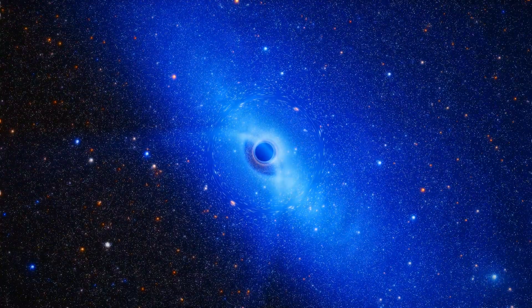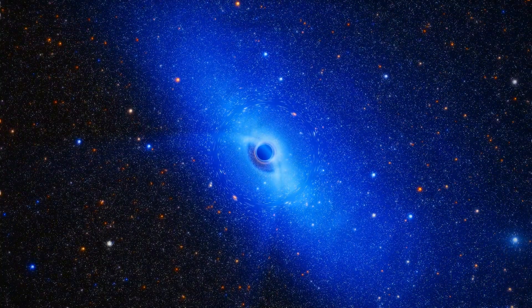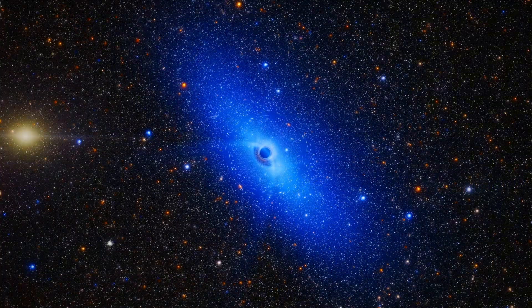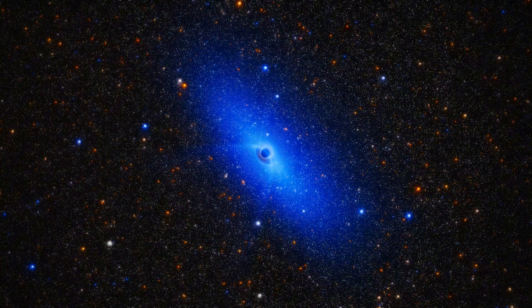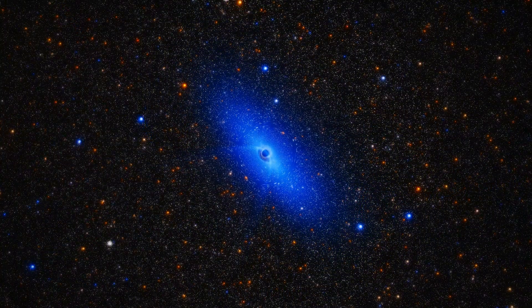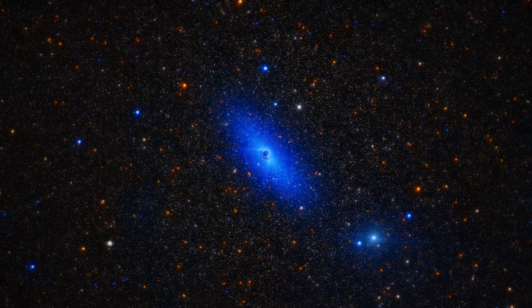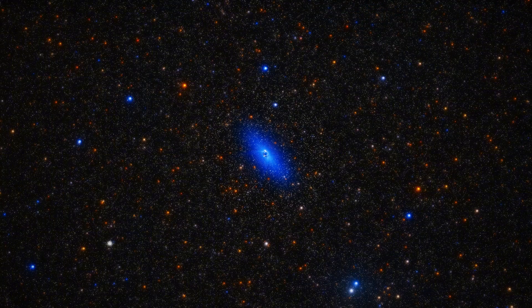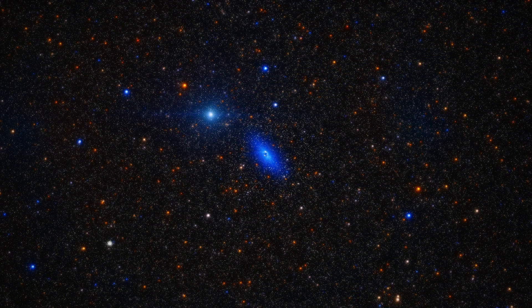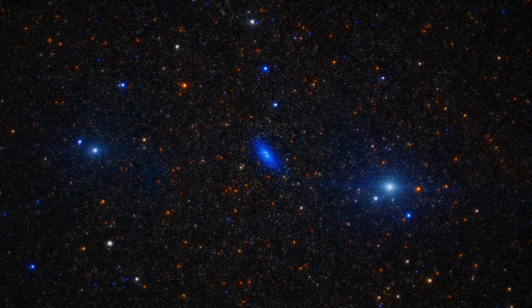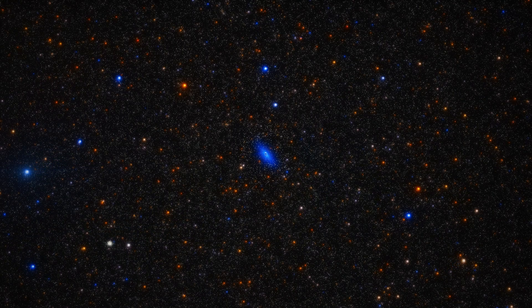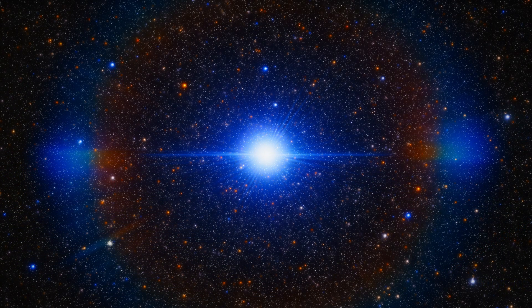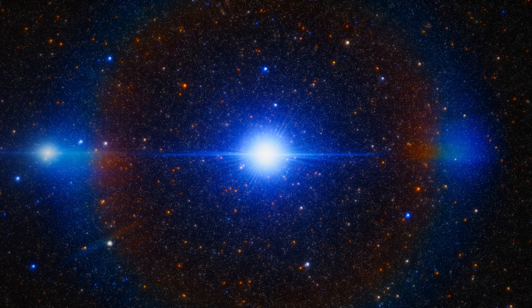But the black hole isn't alone. Dozens of stars orbit incredibly close to it. Astronomers call them the S stars. If we speed up time, we can watch them move. One star, called S2, completes a full orbit every sixteen years. At its closest approach, it moves at nearly three percent of the speed of light. That's over seven thousand kilometers per second, or about four million miles per hour.